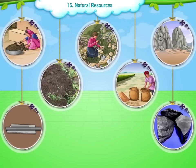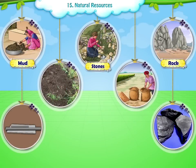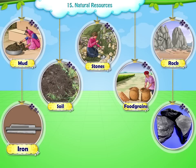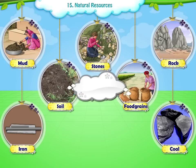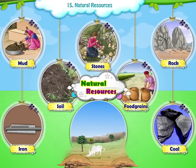In short, mud, stones, rock, soil, food grains, iron and coal are all natural resources obtained from land.